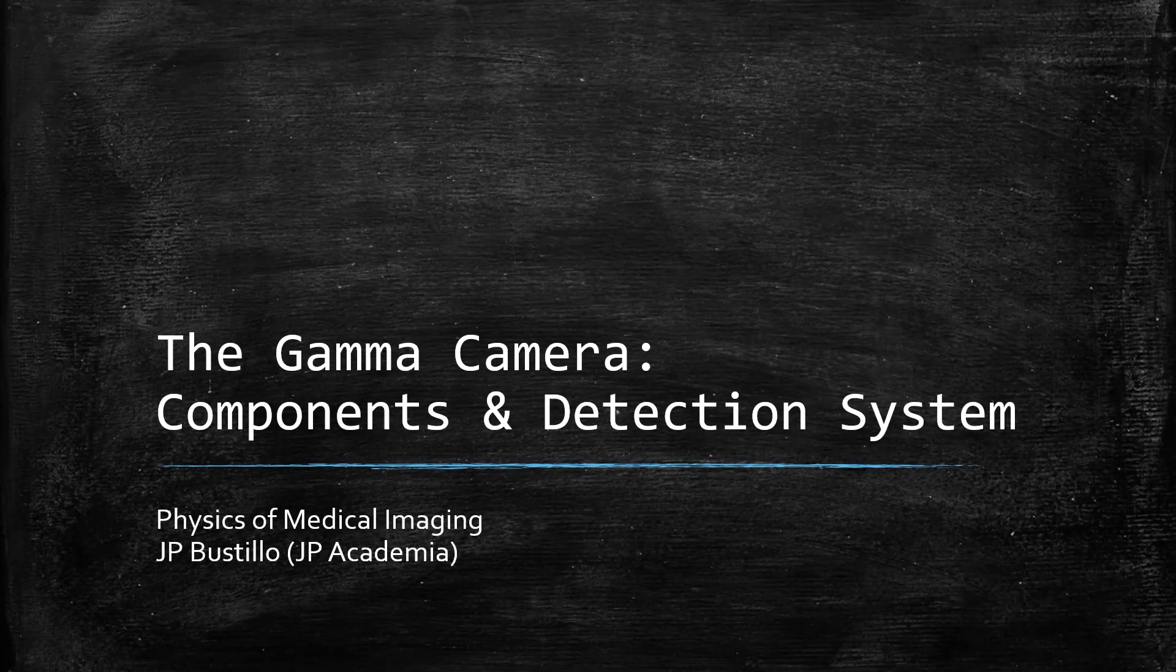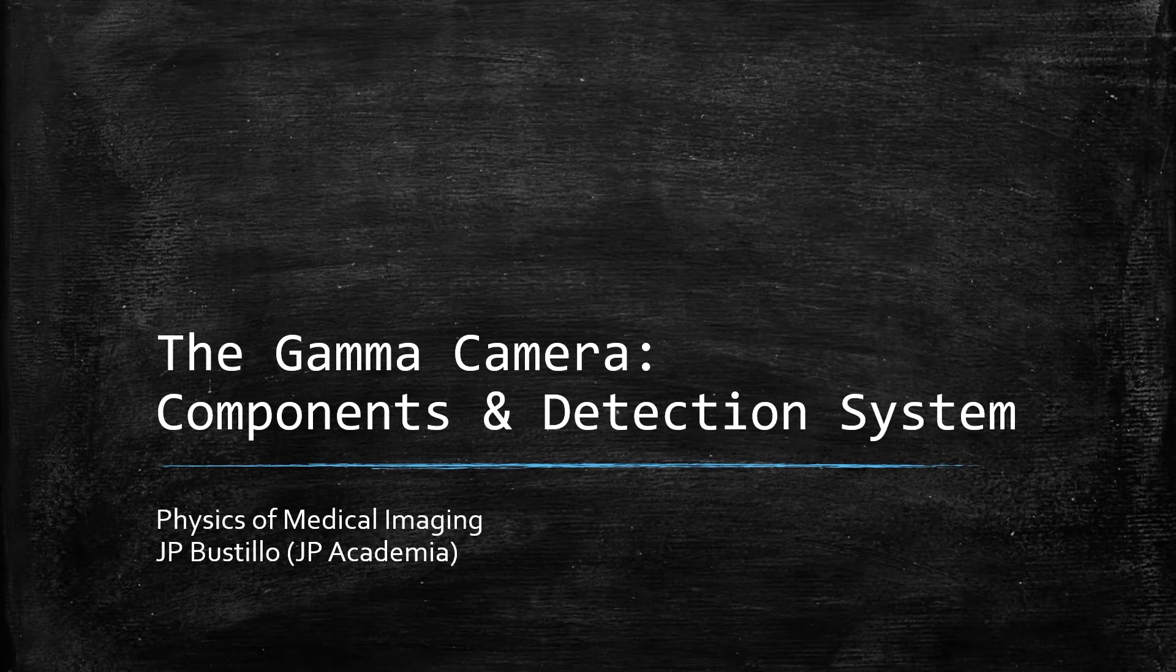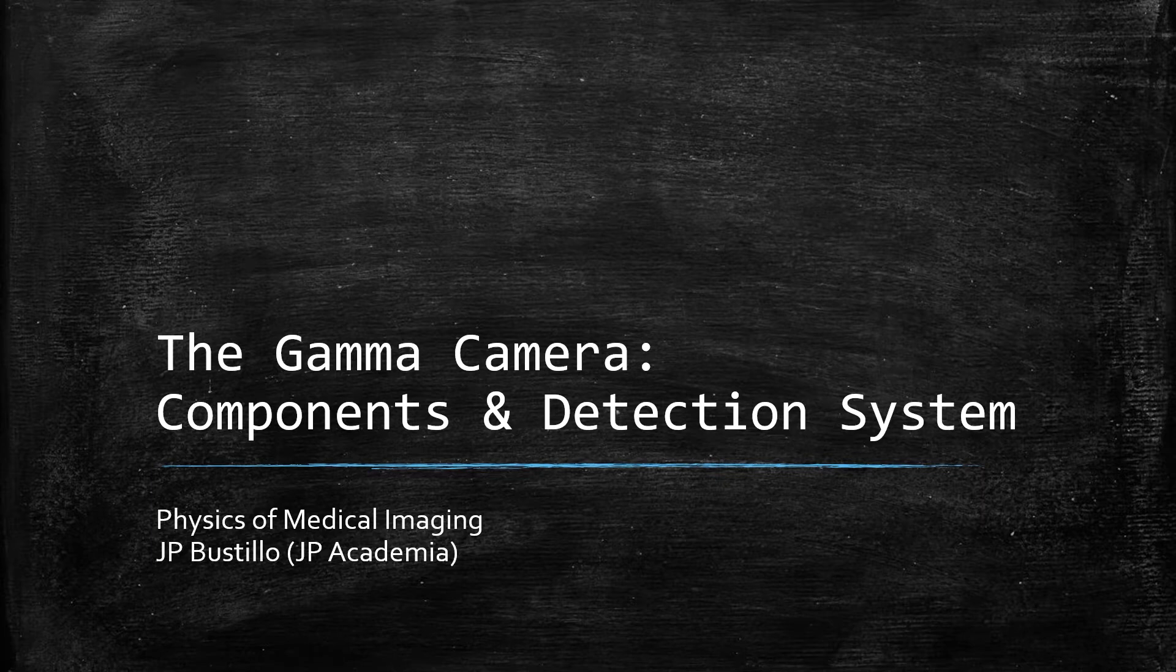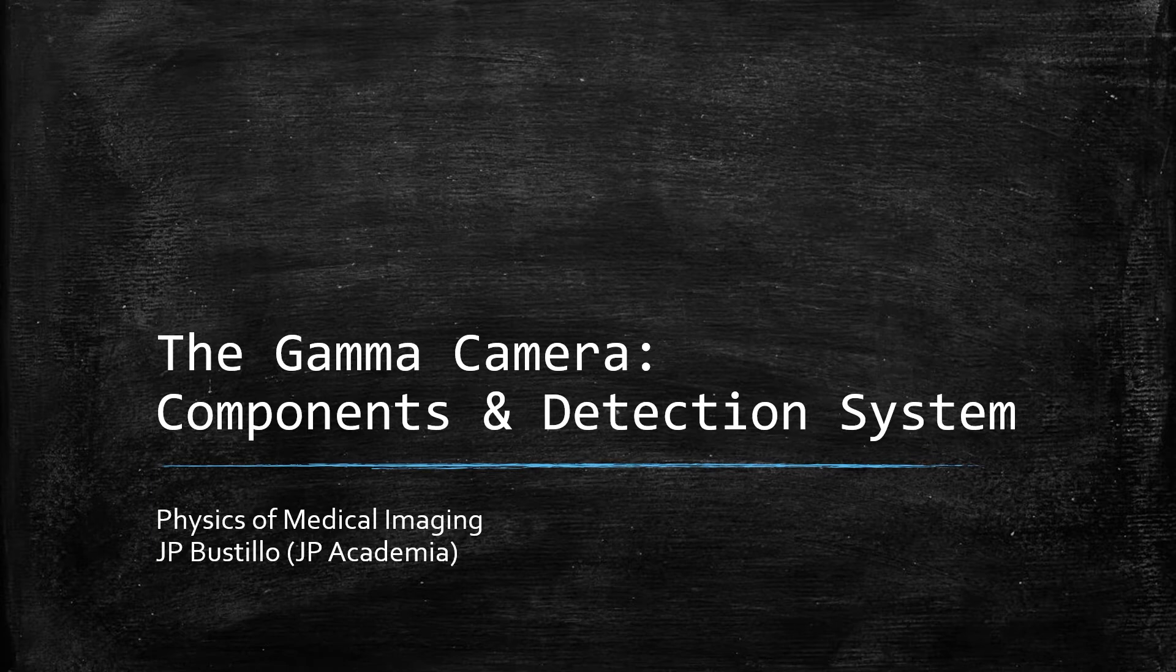Welcome to this lecture on gamma camera. For some years, nuclear images were obtained by using a rectilinear scanner. Currently, nuclear imaging is done with the use of a gamma camera. You can think that this camera takes a picture of a gamma-emitting radioactive source coming out from the patient injected with the radioactive substance. In this lecture, I will introduce the gamma camera.